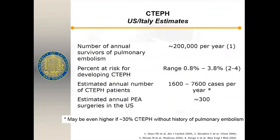From epidemiologic studies using data from the U.S. and Italy, there are approximately 200,000 cases of confirmed large acute pulmonary emboli. Taking a range of one to four percent developing CTEPH, we should be doing approximately 1,600 to 7,000 cases per year in the United States. Currently, only about 300 PTE surgeries are being performed — so it's widely underdiagnosed, underrecognized, and surgery is not performed frequently enough.